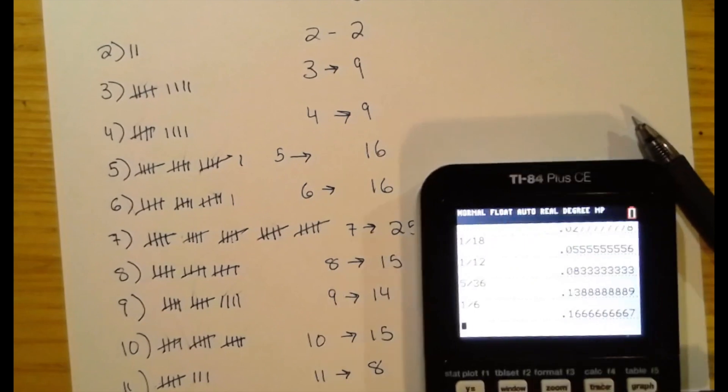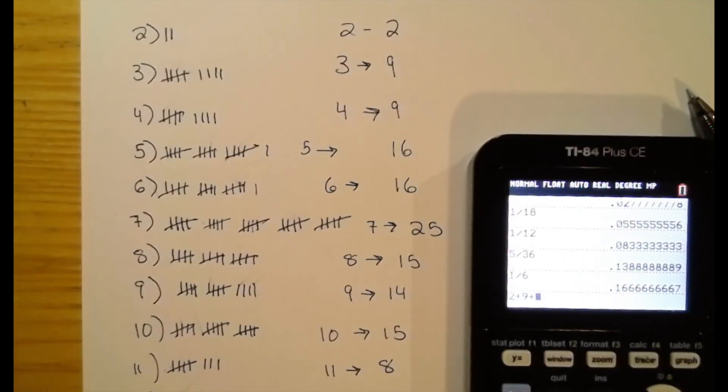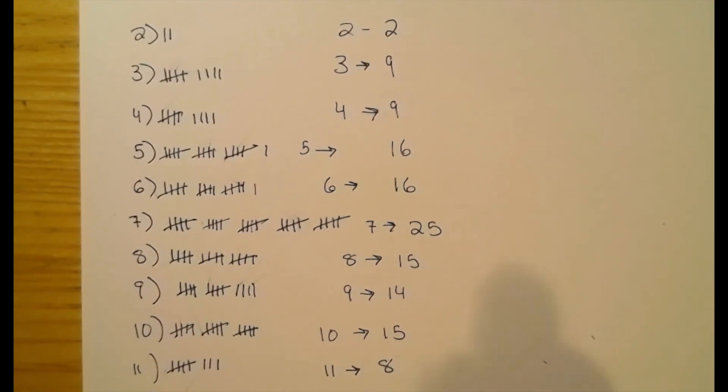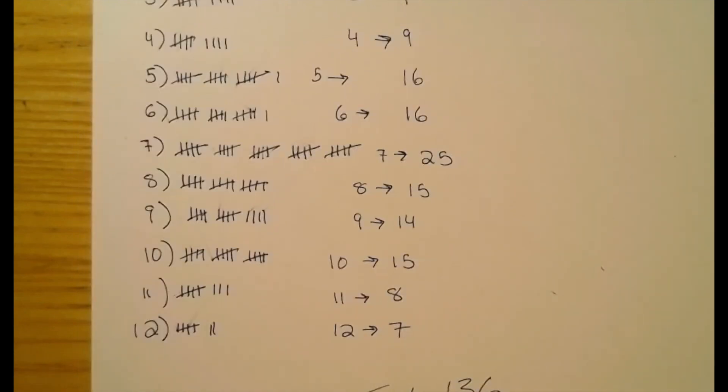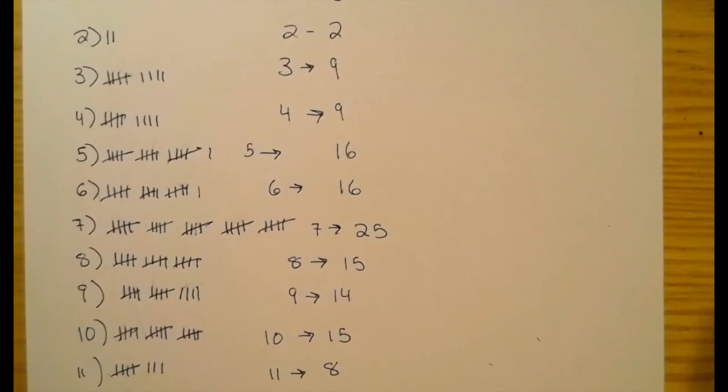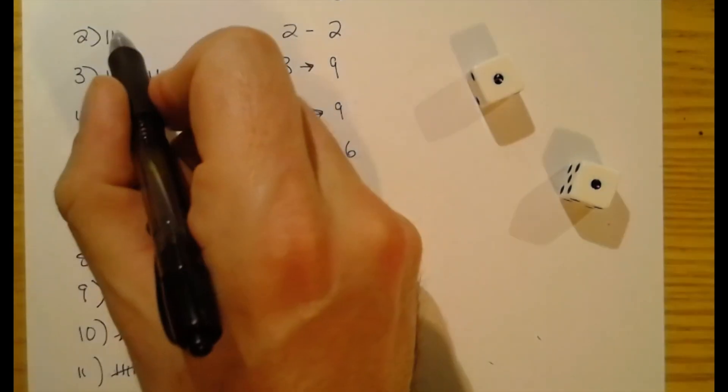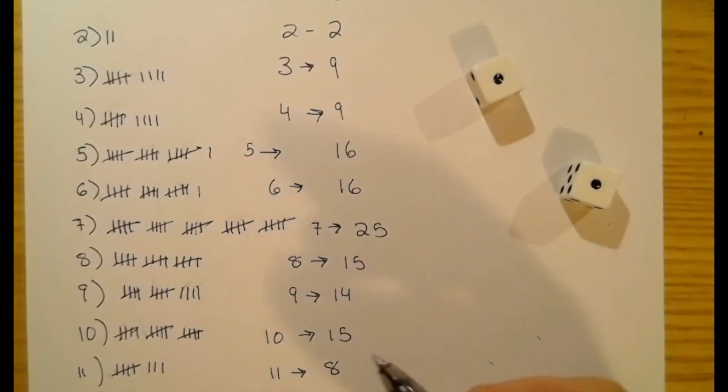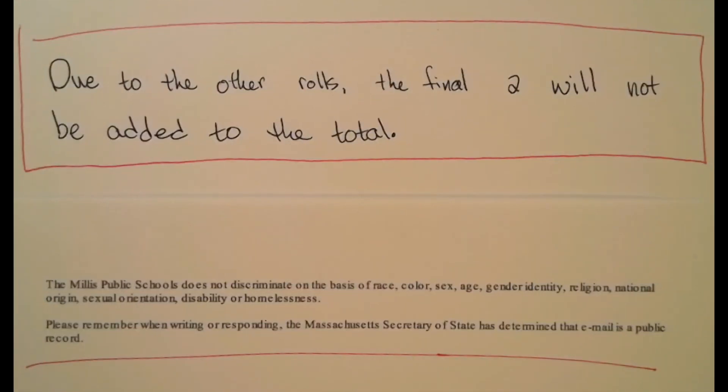I'm curious. How many did I do altogether? Two plus nine plus nine plus 16 plus 16 plus 25 plus 15 plus 14 plus 15 plus 8 plus 7. 136. Yeah, you'll probably do at least 100 rolls, but hopefully less than 200. It doesn't really matter what the number is. Just roll those dice. I was waiting for those snake eyes. You never know with this stuff. It's a game of chance. It really is. I'm going to count that roll.